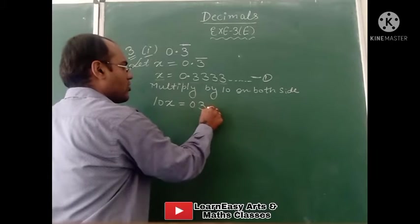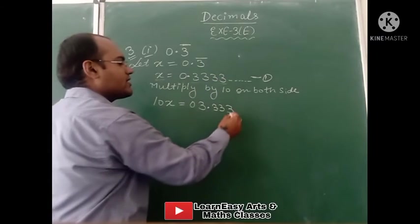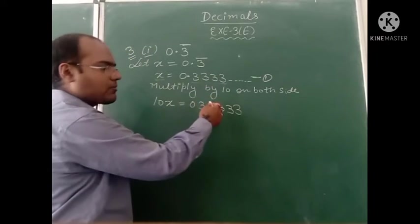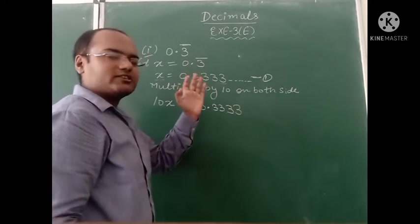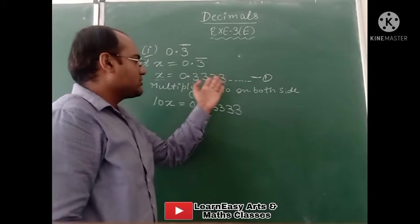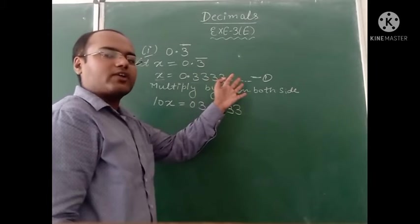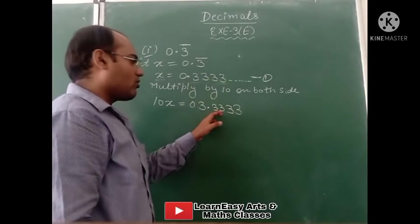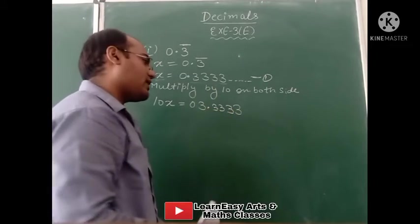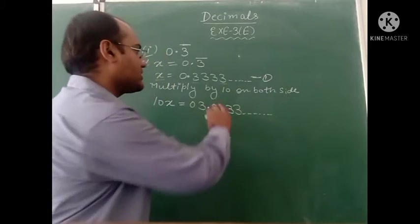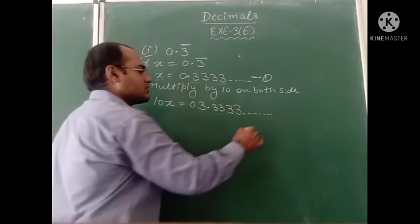This becomes 3.3333. After the decimal we write 4 digits, because in the previous step also we wrote 4 decimal places. So in this step also we write up to 4 decimal places — giving us 3.3333 and so on. This is equation number 2. Equation 2 is greater because it has 10x, and equation 1 is smaller because it has 1x. So we subtract equation 1 from equation 2.